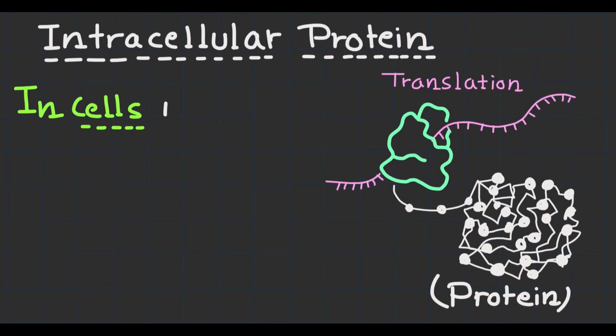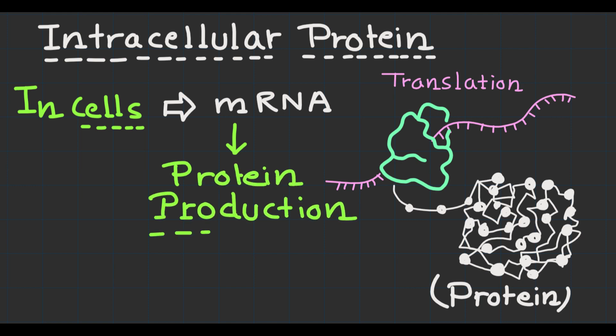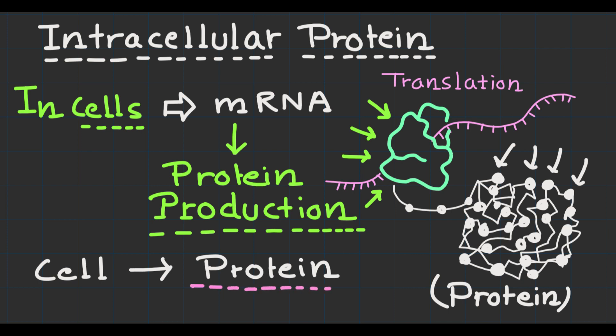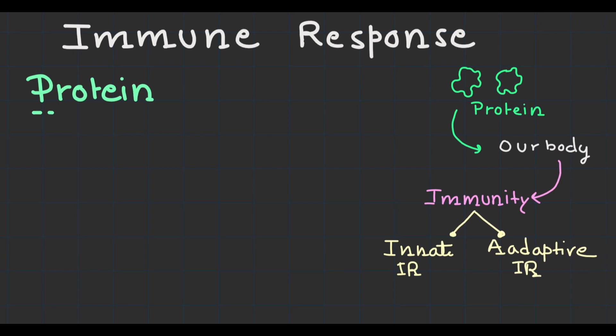Next is intracellular protein production. Within our cells, the mRNA serves as a template for protein synthesis. The cellular machinery reads the mRNA and produces the viral or bacterial protein specified by the vaccine.